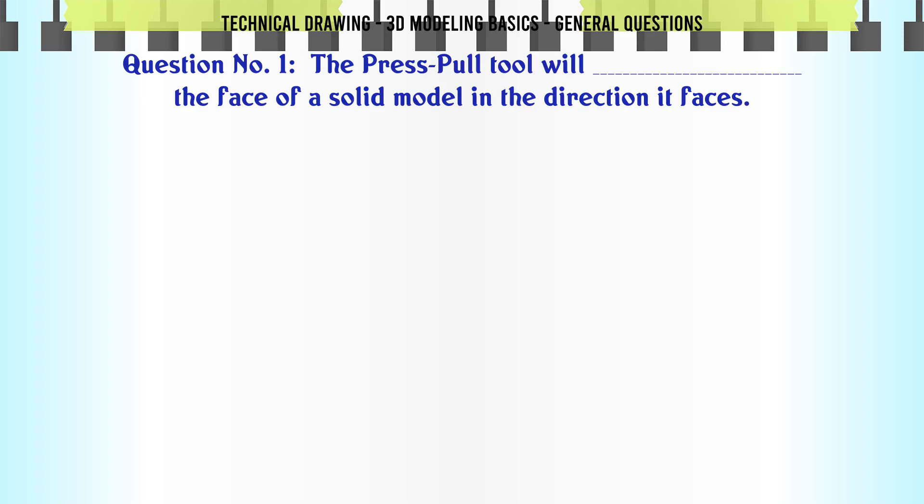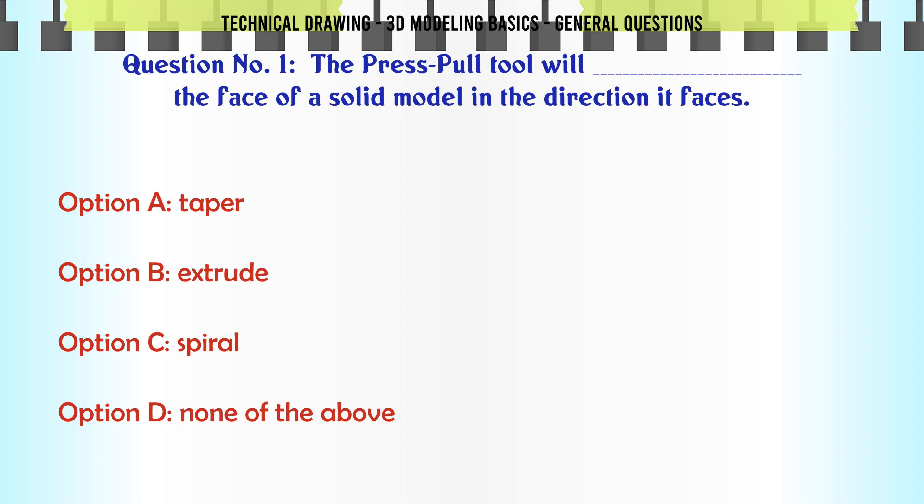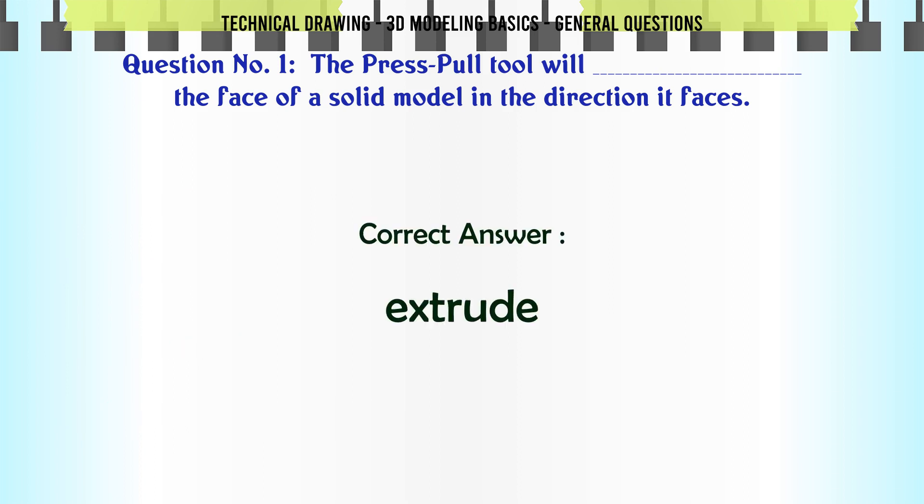The press-pull tool will the face of a solid model in the direction it faces. A. Taper. B. Extrude. C. Spiral. D. None of the above. The correct answer is Extrude.